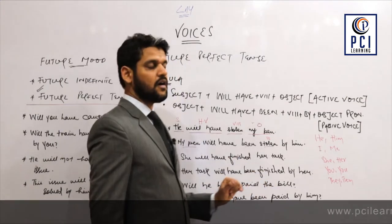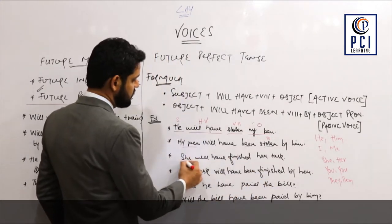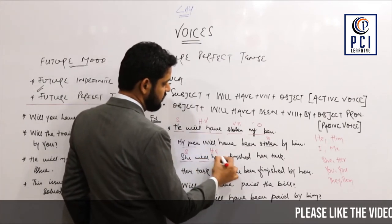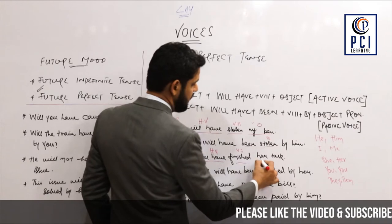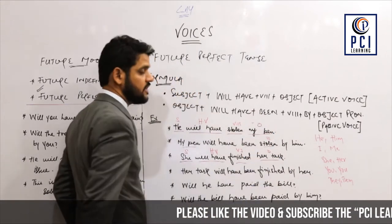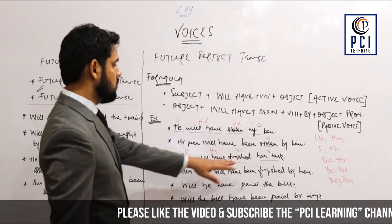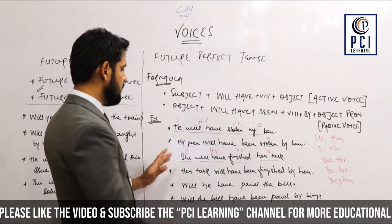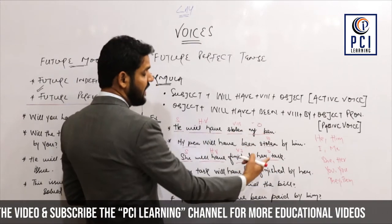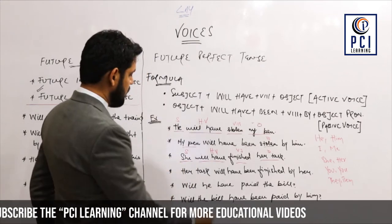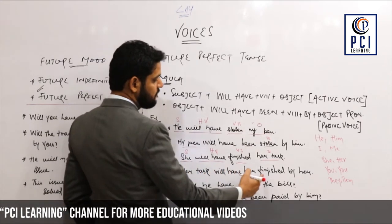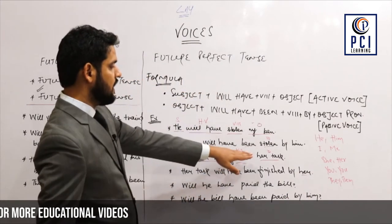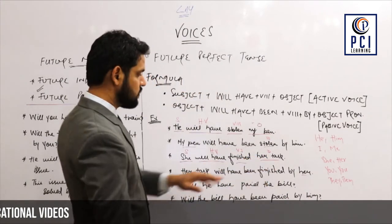'She will have finished her task.' Same condition applies here — 'she' is the subject, 'will have' is the helping verb, 'finished' is third form of verb, and 'her task' is the object. So 'her task' will come at the place of subject, and the subject will come at the place of object: 'Her task will have been finished by her.'